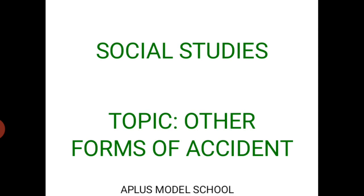We also mentioned problems of traffic regulation: bad roads, corruption of officers in charge, ignorance of some drivers, carelessness and negligence, bad condition of vehicles, bad weather, and high cost of spare parts. Ways to solve these problems include regular maintenance of roads, regular patrol by traffic officers, regular vehicle inspection, and placing traffic signs where necessary.